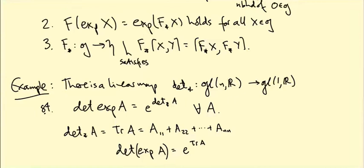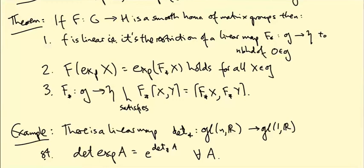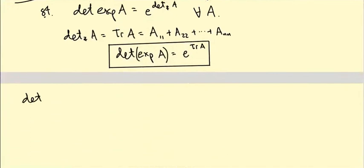Let's justify why it's the trace. By the theorem we haven't yet proved, det star is a linear map, so it's sufficient to compute it on a basis. It's determined by its value on a basis of little gl(n,R).